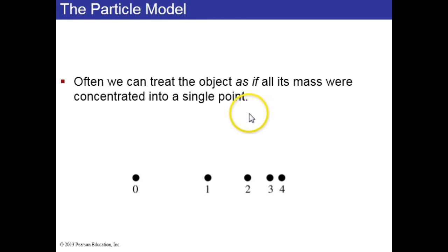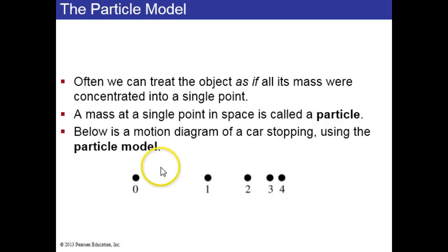Often we can treat an object like a car as if all its mass were concentrated at a single point. It's called the particle model. Here is a motion diagram of a car that's slowing down using the particle model. We've labeled the dots 0, 1, 2, 3, 4 to show that this is increasing time. And the dots are getting closer together so it must be slowing down.